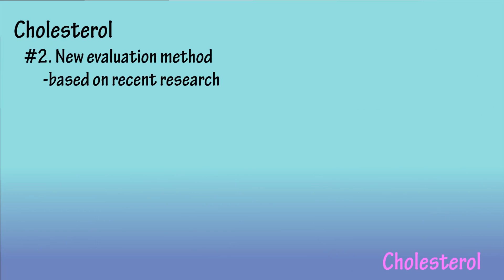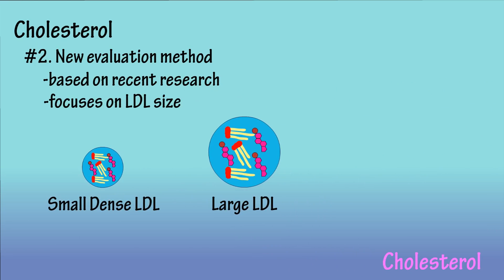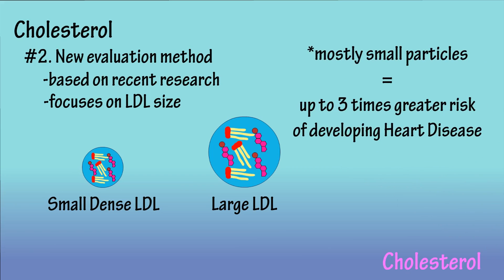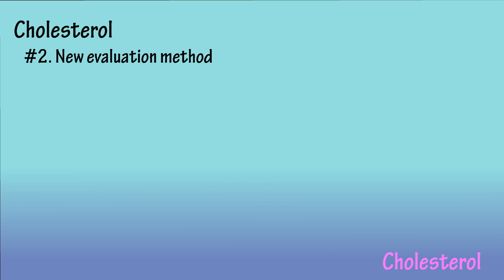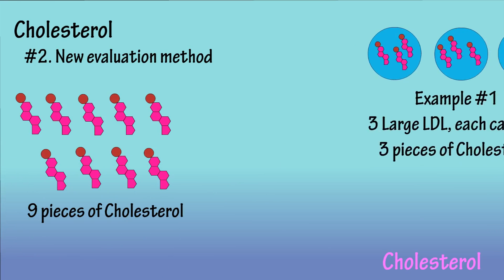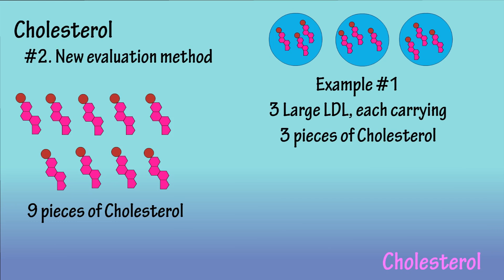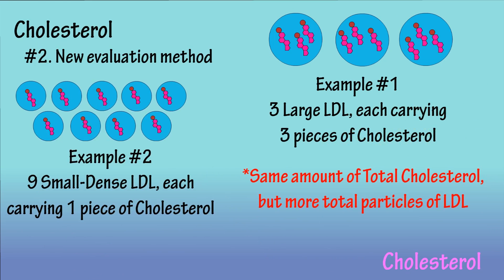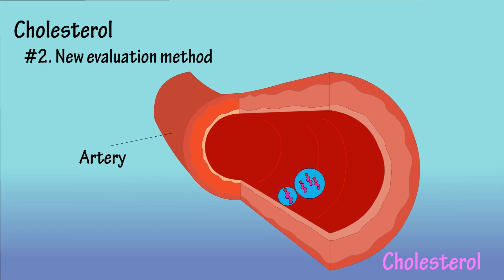Now let's look at cholesterol evaluation method number two. The main difference between this method and method one is that this method focuses on LDL size. Their size is often classified as small dense LDL or large LDL. Studies have shown that people who have mostly small particles have up to a three times greater risk of developing heart disease. For example, let's say we have a total of nine pieces of cholesterol. In example one, three large particles of LDL are each carrying three pieces of cholesterol. In example two, nine particles of small dense LDL are each carrying one piece of cholesterol — the same total cholesterol but a higher quantity of particles. The small dense LDL particles can more effectively stick to and enter arterial walls, contributing to arterial plaque.